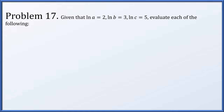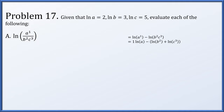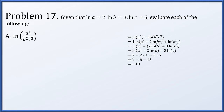Problem 17: given ln a = 2, ln b = 3, ln c = 5, evaluate four expressions. Part a: ln of (a over b squared c cubed). This is a difference of logs; the left side gives 1 times ln a, and the right side is the log of a product expanded as 2 ln b plus 3 ln c, with a minus sign distributed across. Substituting known values: 1(2) minus 2(3) minus 3(5) equals 2 minus 6 minus 15 equals negative 19.